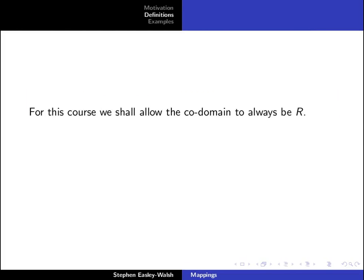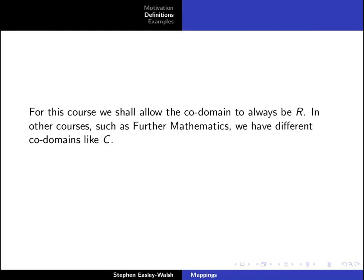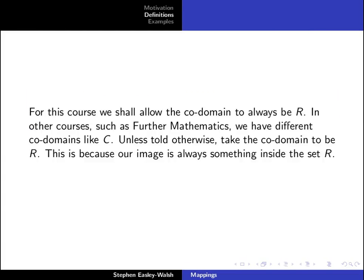For this course we shall allow the codomain to always be R. In other courses such as further maths we will have different codomains like complex numbers C. Unless told otherwise take the codomain to be R. This is because our image is always something inside the set R.